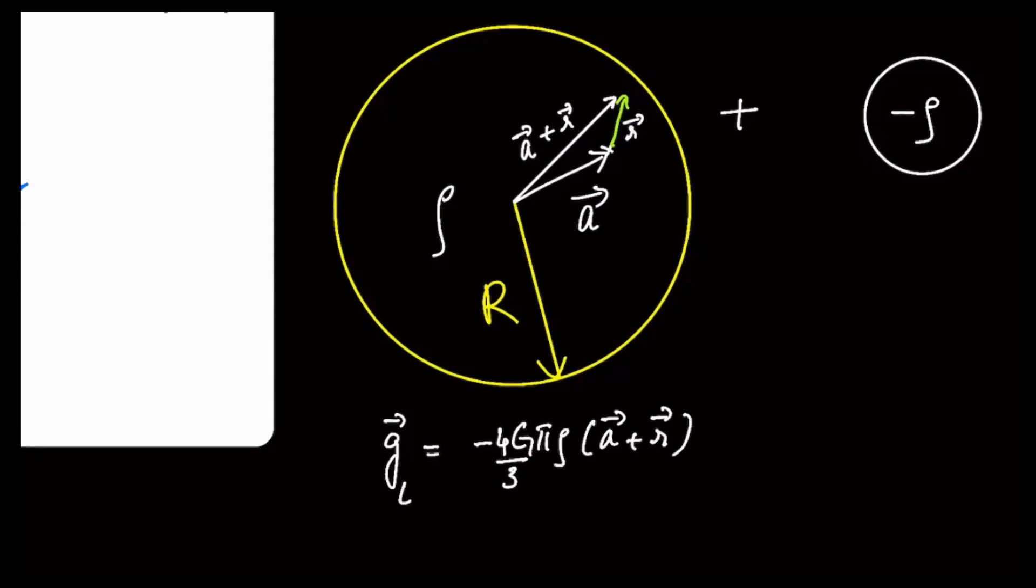as we just discovered some time ago, that must be the contribution. To that we need to add the g from small. And that is going to be equal to the density of that is minus ρ divided by three. The vector position is just r, and therefore you're going to have a vector r. So it's the sum of these two contributions.